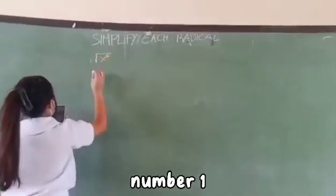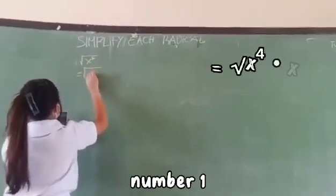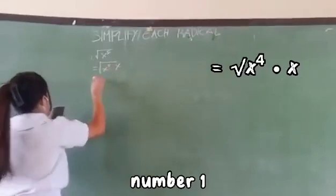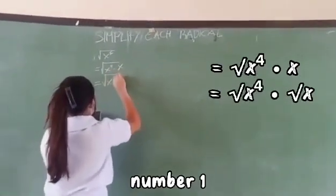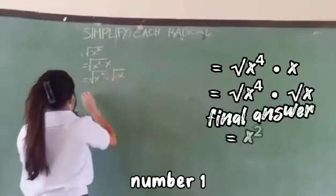Number one: X to the fifth. It needs to borrow X from the exponent, then X to the fourth removes the extra. To divide by square root, the X⁴ becomes X² while the other X just stays there.